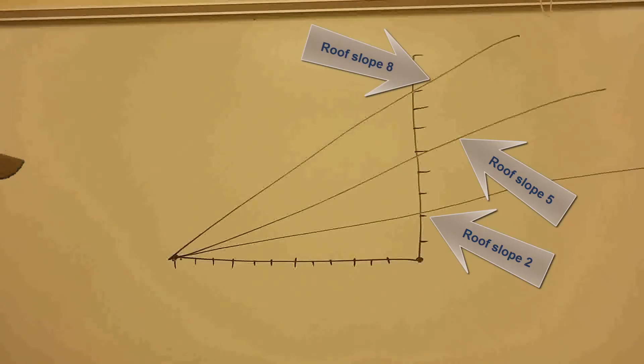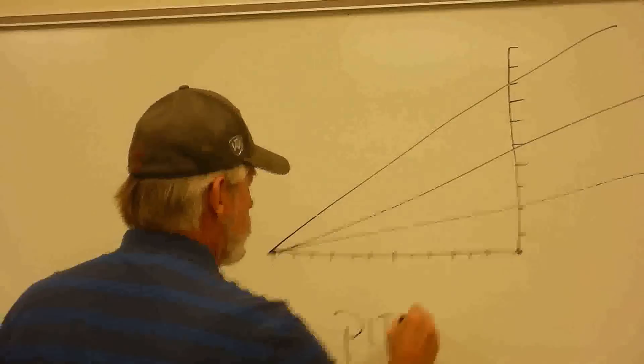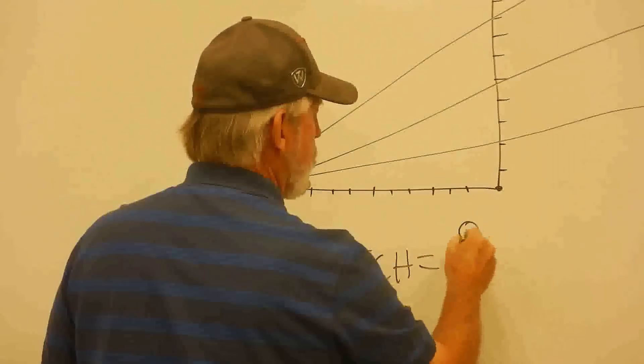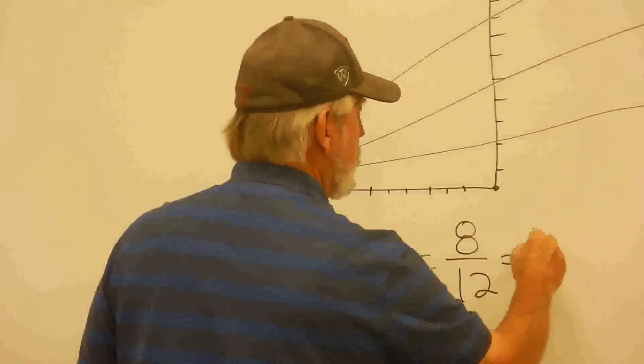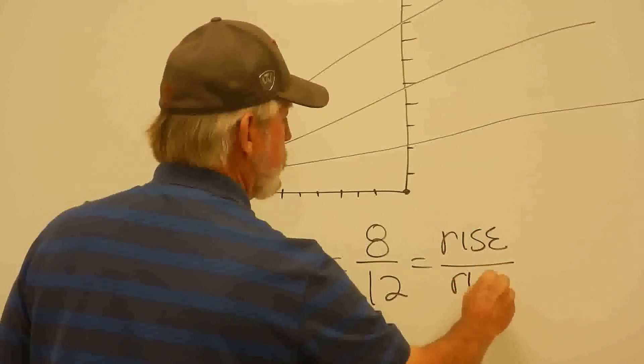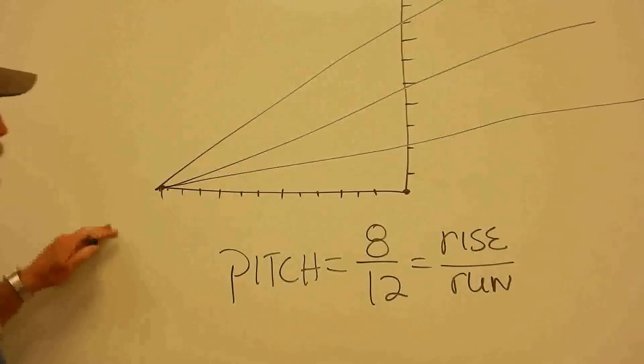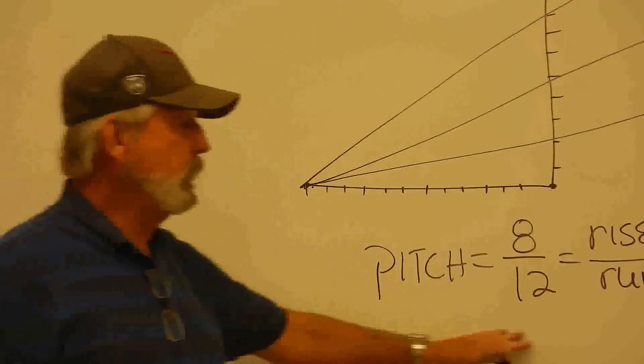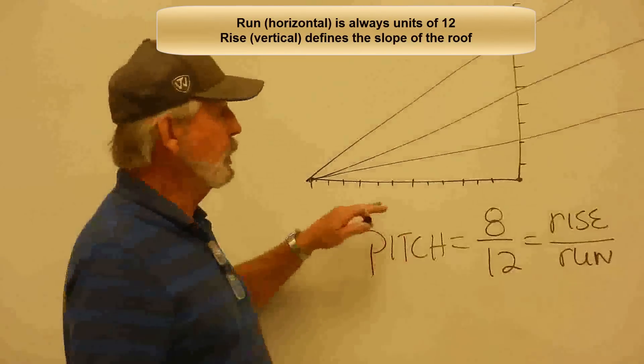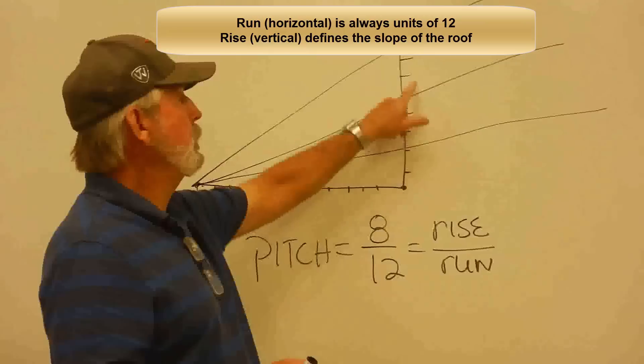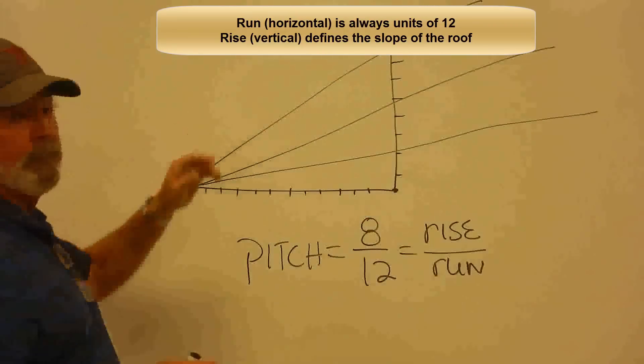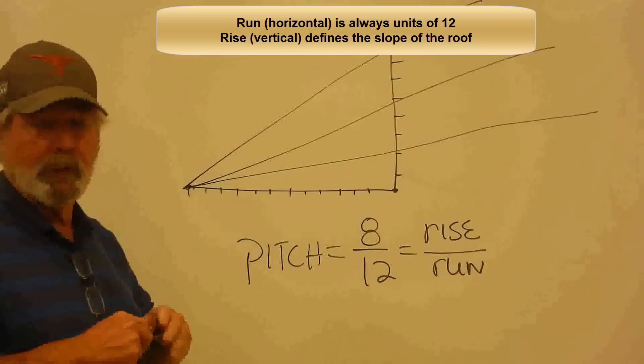Architects use a graphic, and they say typically the pitch is equal, in this case, 8, 12, which means that is your rise over your run. And again, when you're talking about this, the run is always going to be units of 12, or 12 units over. And then the number of units up you go, that's going to be the rise, and that's going to be the visual description of what the slope of the roof is.